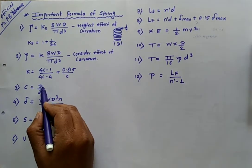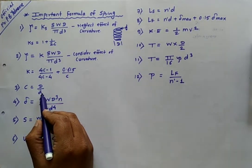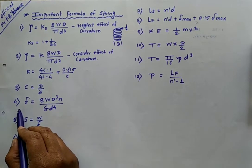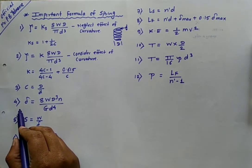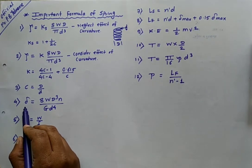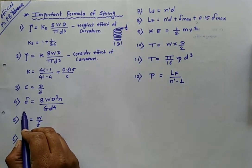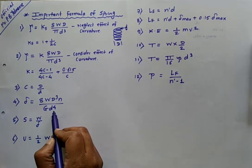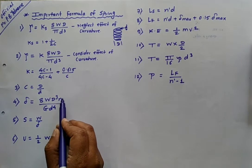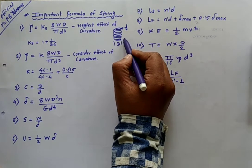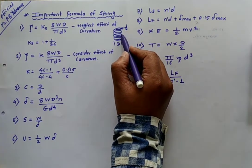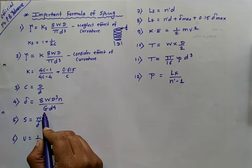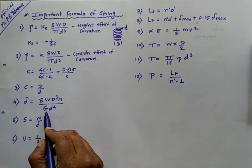The spring index c is the ratio of the mean diameter of the spring (capital D) to the wire diameter (small d). Whenever a load is applied on a spring, the spring deflects by a certain distance. That deflection delta is calculated using: delta = 8WD³n / (Gd⁴), where n is the number of coils in the spring and G is the modulus of rigidity of the spring material.